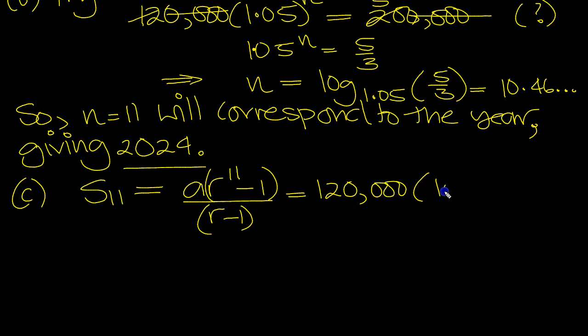So that's A times R to the N minus 1 over R minus 1. The A is 120,000. R to the 11 is 1.05 to the 11 minus 1 over 1.05 minus 1 is 0.05. So that's what we've got.